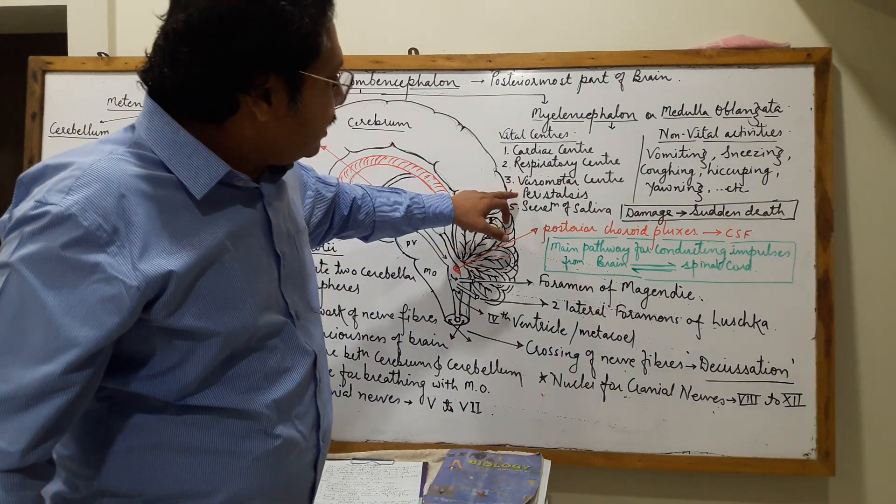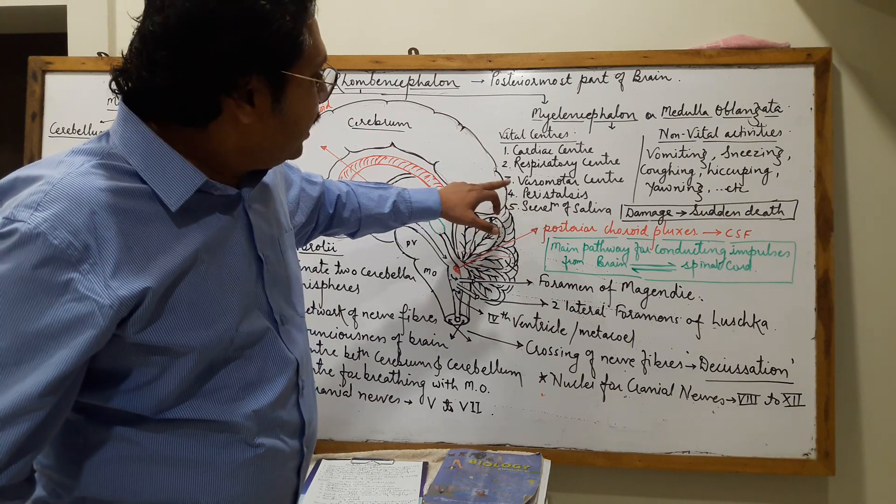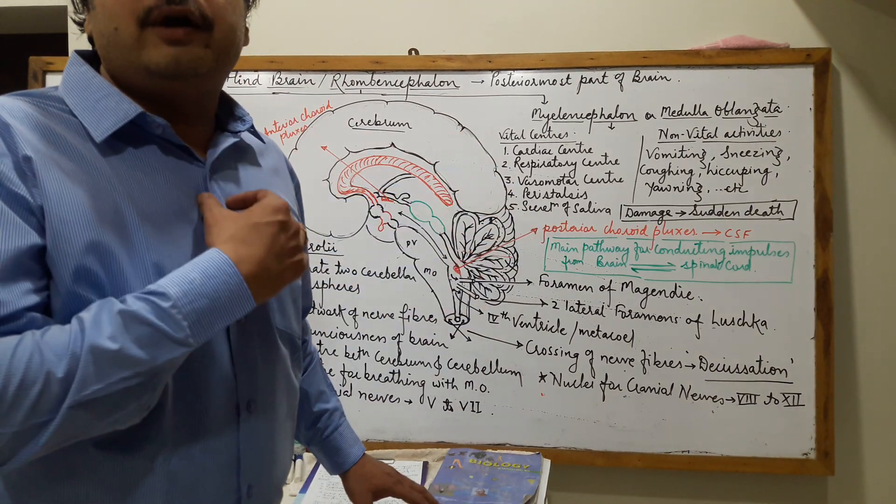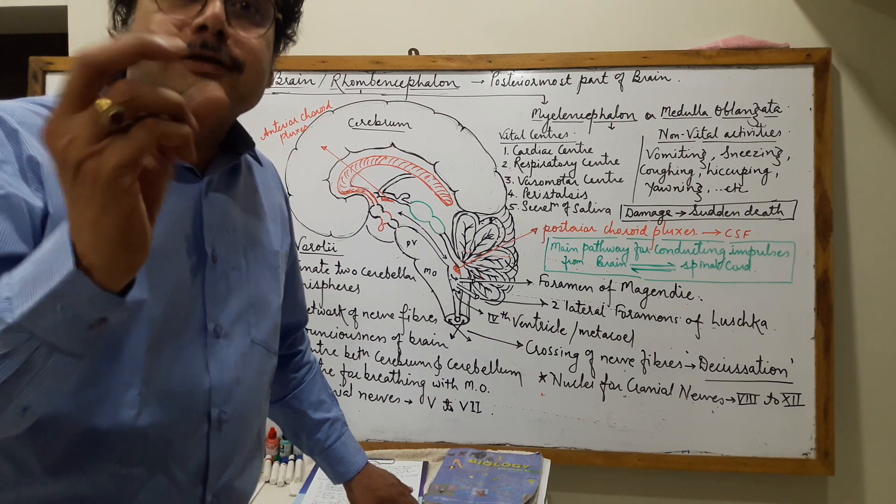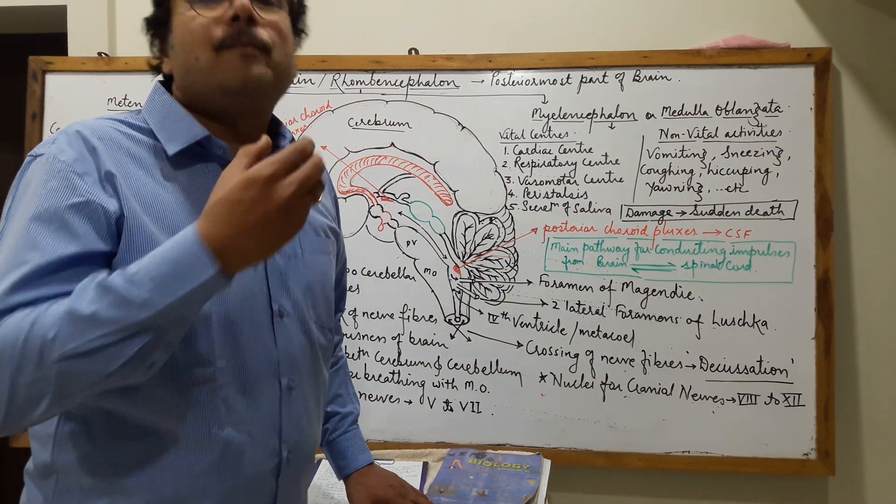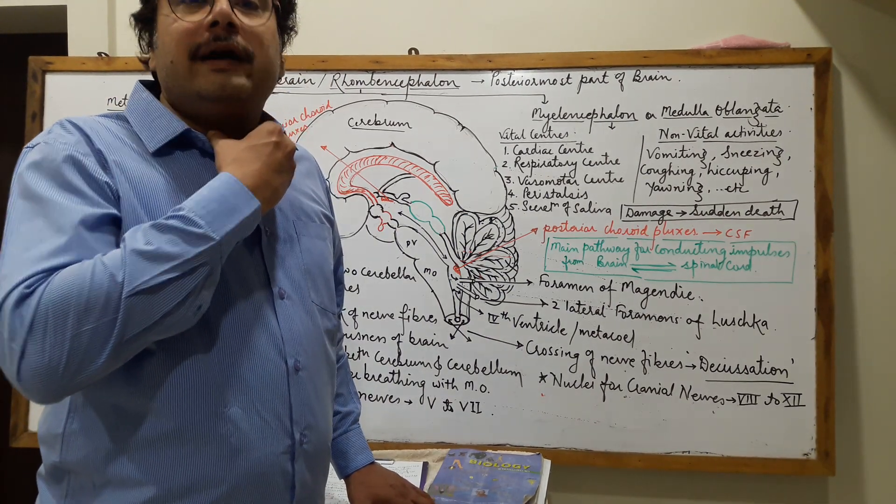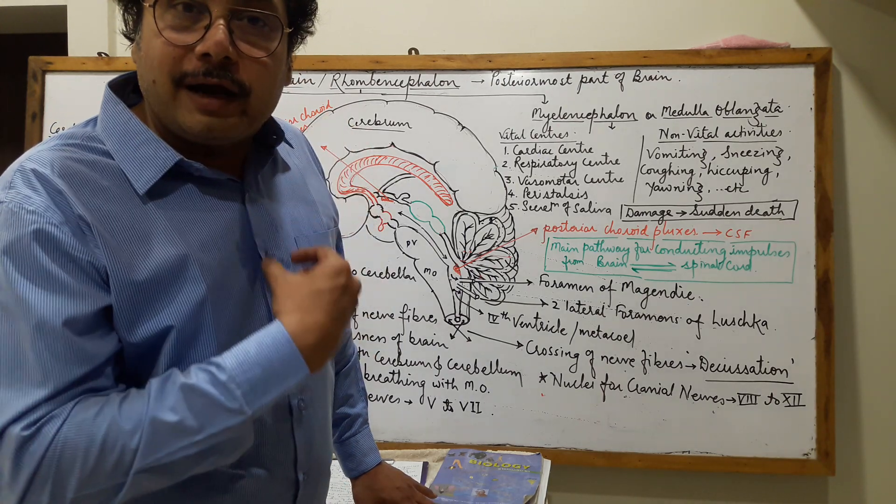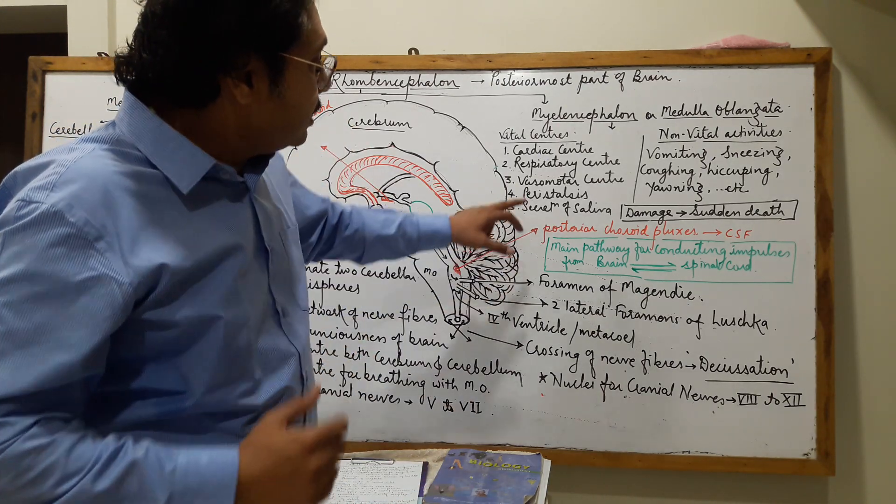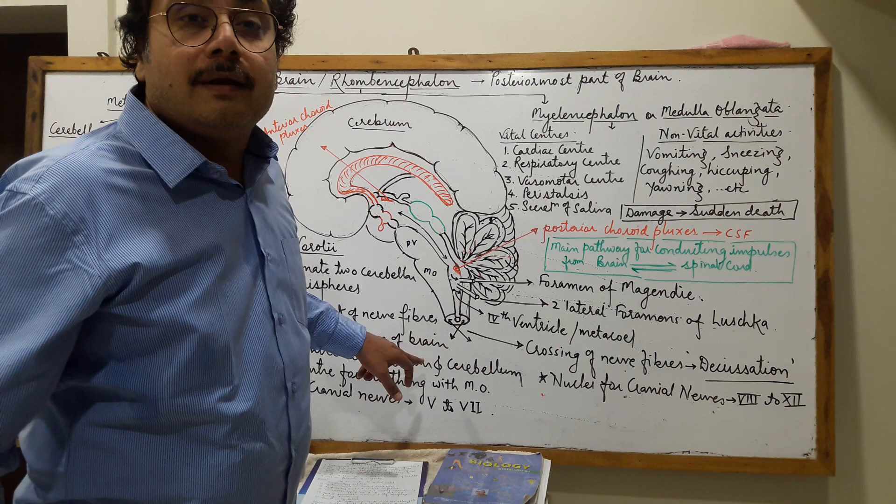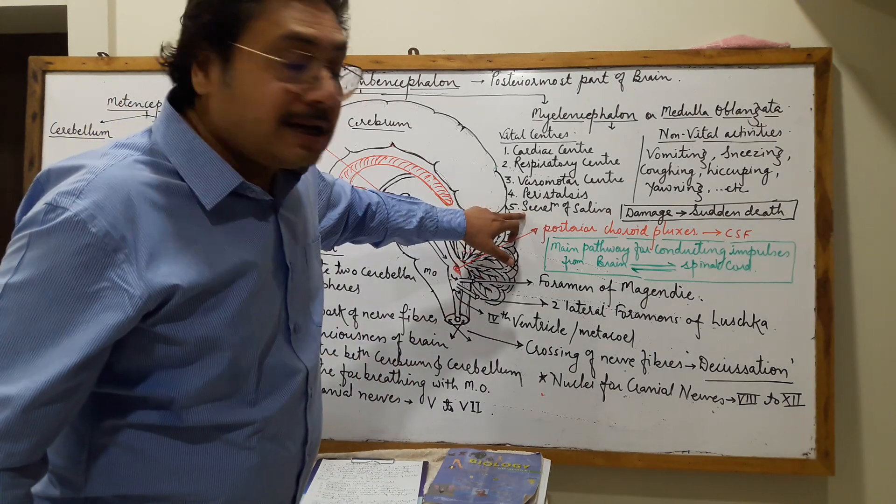Next, it also regulates peristaltic movement—the peristaltic movement of the esophagus to convey the food bolus. After swallowing, it carries food to the stomach by that wave-like movement of the esophagus. This is controlled by the medulla oblongata, as is the secretion of saliva.